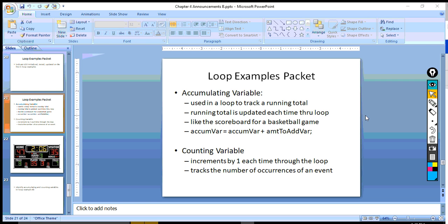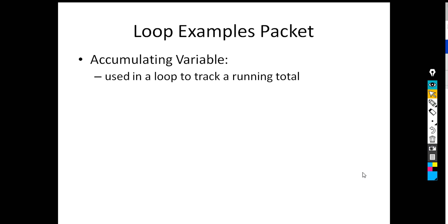The last thing we did in class today was go over the difference between an accumulating variable and a counting variable. We've done a little bit of notes on accumulating variable, but not on the counting variable, so we just want to make sure that we touch base on that. The accumulating variable is used in a loop to track a running total, and it's important that you understand this because it will help you contrast it with what a counting variable does.